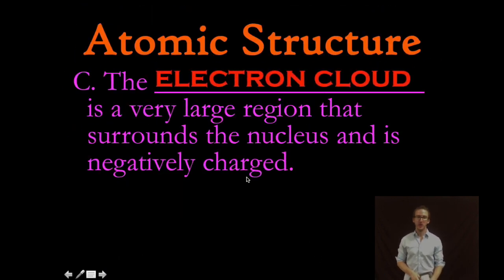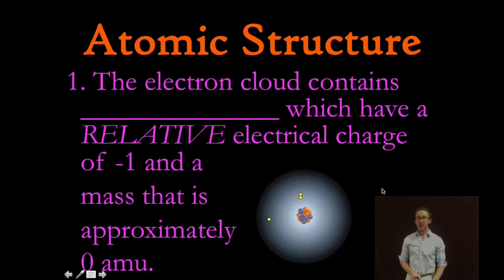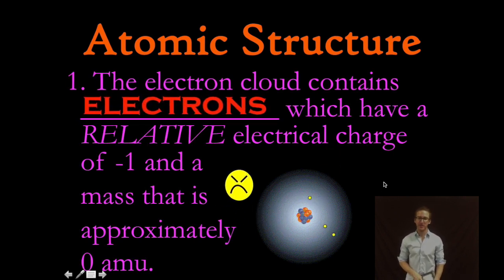This brings us to the electron cloud. It's a very large region that surrounds nucleus and is negatively charged. Again as you come back to your model this region of empty space is known as the electron cloud but that electron cloud is where the third and final member of the atoms family hangs out.